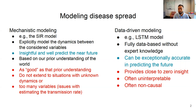Mechanistic models also do not extend easily to situations with unknown dynamics. If you don't know how interactions between variables are happening, it's really difficult to write down equations for them. If you have too many variables, you need to make simplifications. One issue I'll address later is estimating the transmission rate in SIR models — often it's assumed to be constant, whereas in reality it changes over time.